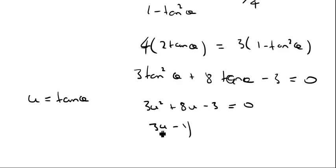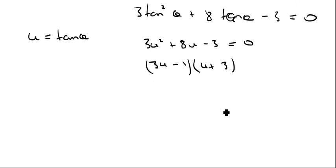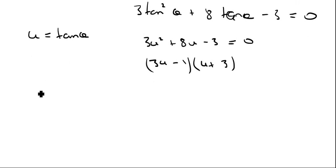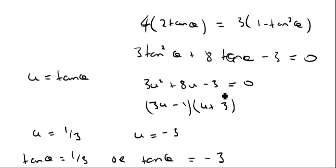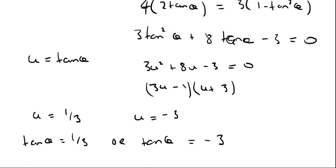And I can factorize that: 3u minus 1, u plus 3. Therefore, this first bracket gives me u equals 1/3 and the second one gives me u equals minus 3. But remember, u is tan θ, therefore tan θ is 1/3 or tan θ equals minus 3. And that's it because it asked me to find values of tan θ.